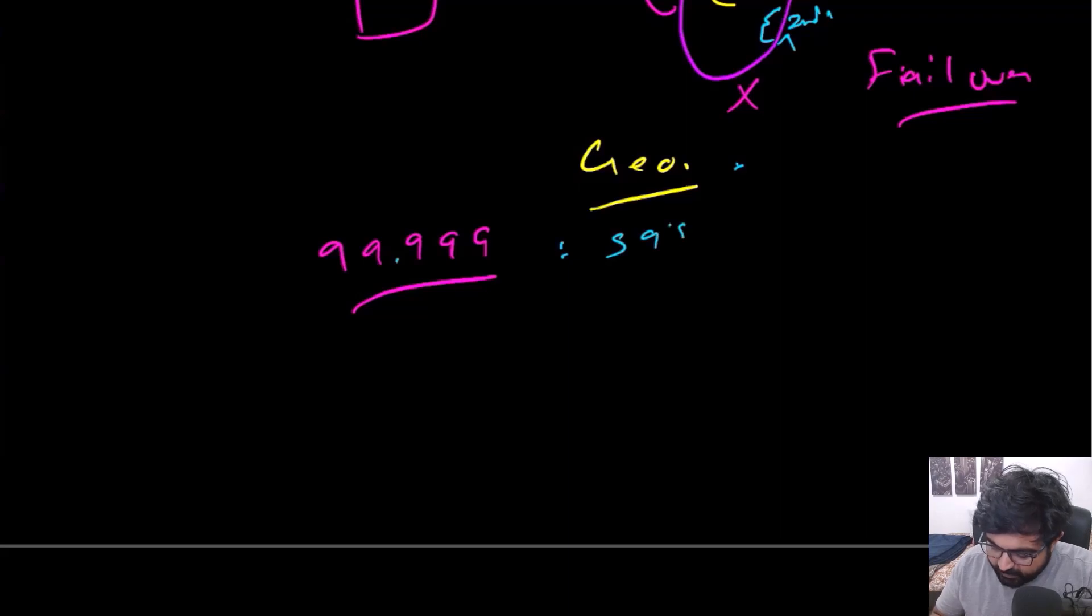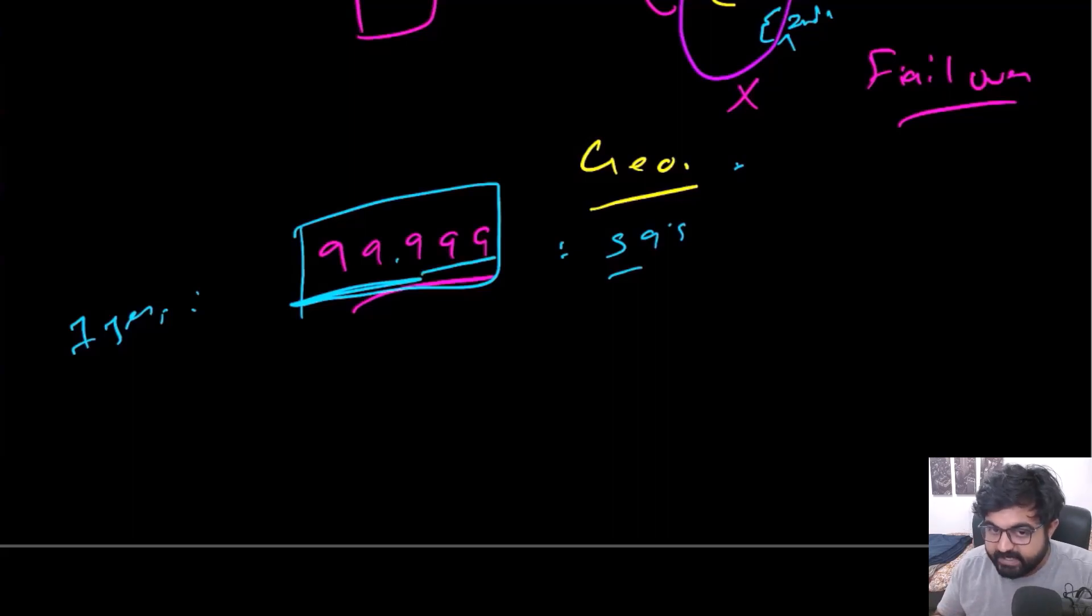What five nines means is that in a single year, typically you expect your system to be up and running or available 99.999% of time. This is one of the measures to measure how available your systems are.